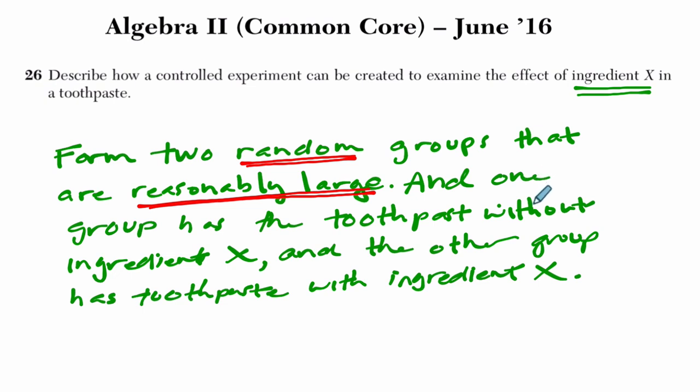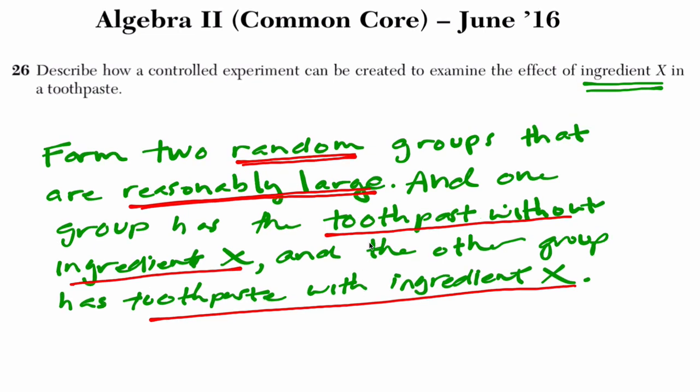And then they want to know that you know that one group needs to have the toothpaste without the ingredient, that's one of your groups, and the other one is the toothpaste with the ingredient, so that you can isolate that ingredient's impact on the group. That's it. Alright, hope that helps. Oh, and also...